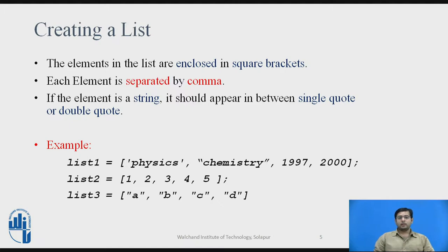How to create a list? In List, the elements of the list are enclosed in square brackets. Square bracket denotes that the particular data type assigned to the variable should be a list data type. Each element is separated by commas. If you are using any string as an element in a list, it should appear in between a single quote or a double quote. See the example below. List 1 contains four elements, of which Physics and Chemistry are the string type, and 1997 and 2000 are of integer type. Physics is enclosed in a single quote, and Chemistry is enclosed in a double quote.